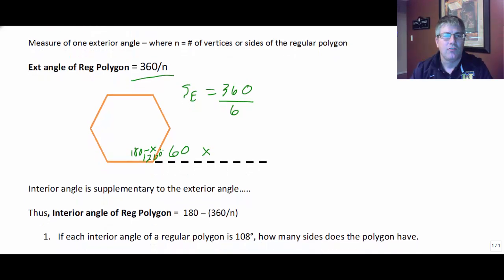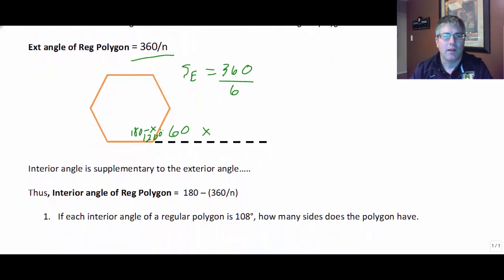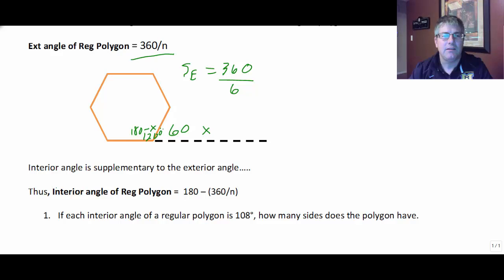But that also leads us to our second formula. And that is the interior angle of a regular polygon is essentially the supplement of the exterior angle, or 180 minus 360 over n, or 180 minus whatever that particular exterior angle is.